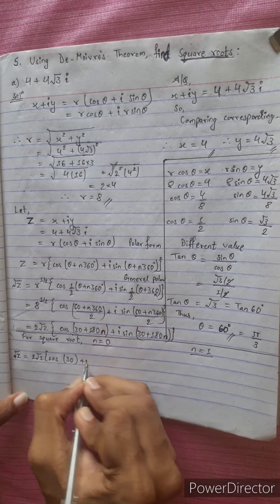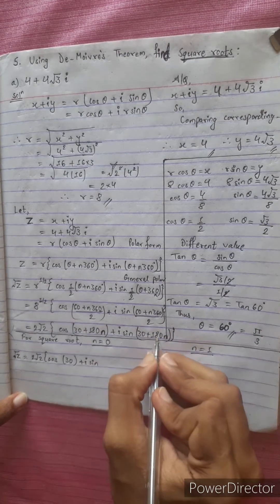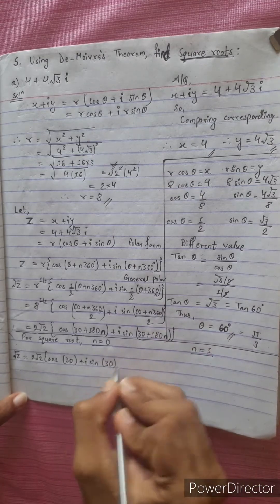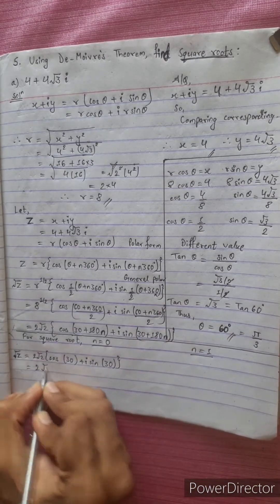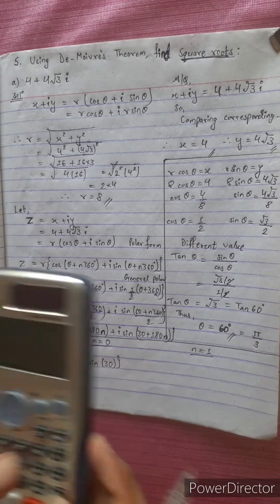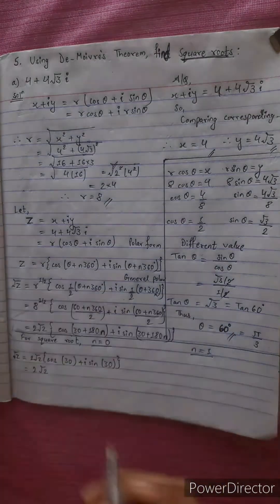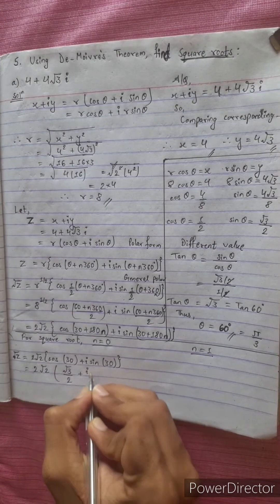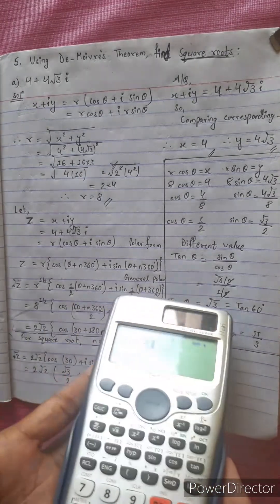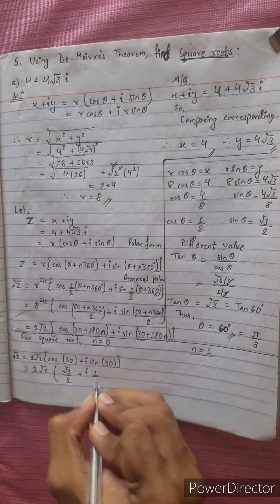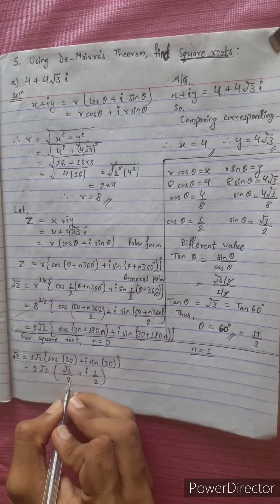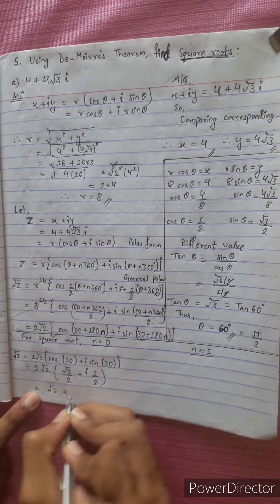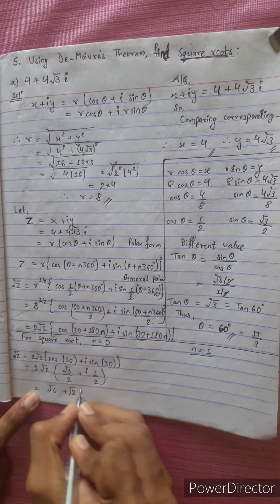For n equals 0: 2 root 2 cos(30 plus 0) plus i sin(30 plus 0), which gives 2 root 2 times root 3 by 2 plus i sin 30 times 1 by 2. After simplification, cutting 2 by 2, we get root 6 plus root 2 i.